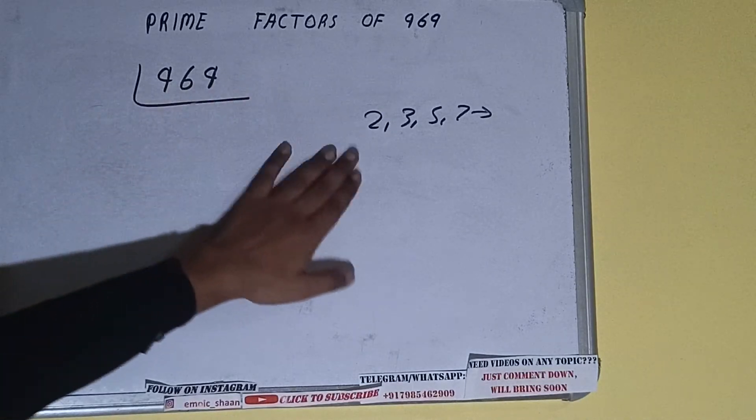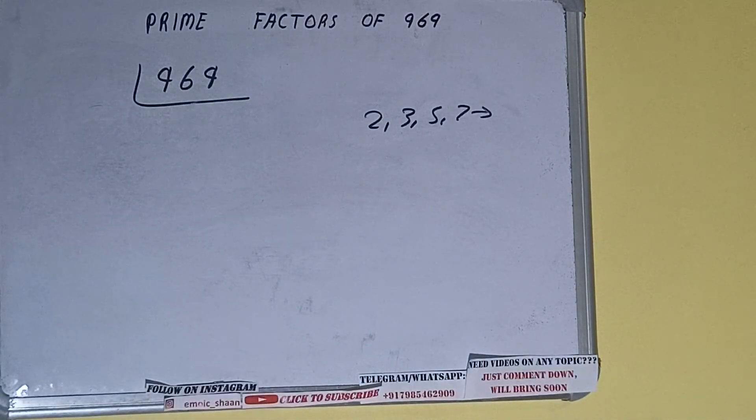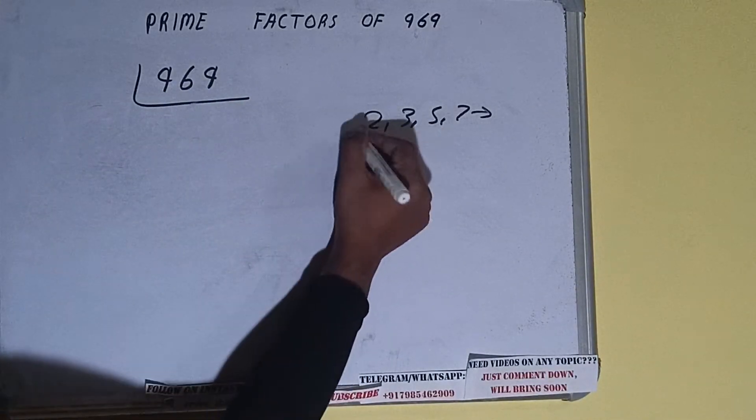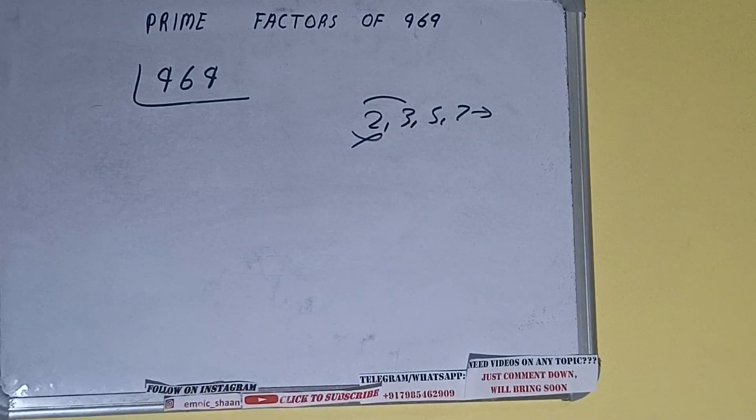Is the number 969 divisible by 2? It is not, because the number is odd. So we'll check with the next lowest prime number, that is 3. 3 plus 9 is 12, 12 is divisible by 3, so 969 is divisible by 3.